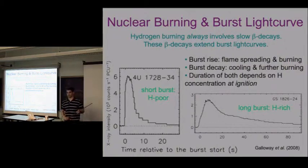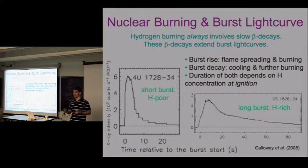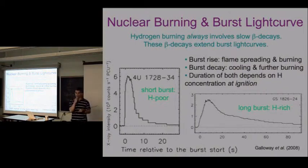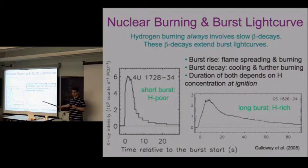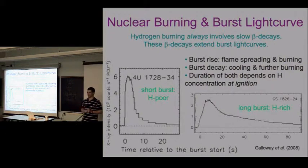Spectral features of hydrogen-poor bursts are hard to detect - they basically look like black bodies. There have been some reports of seeing iron lines in bursts, but those are weak and hard to reproduce. It would be really interesting if you could see the products of nuclear burning, like a line from one of the proton-rich isotopes produced - that in itself would be an indication of the burning.